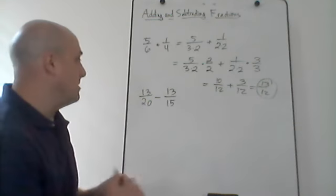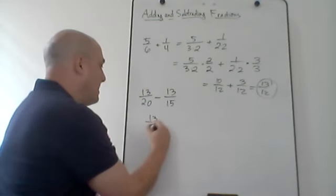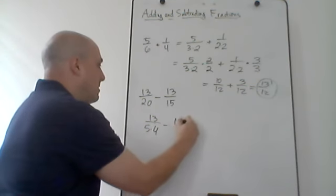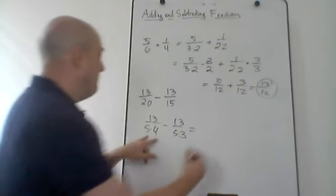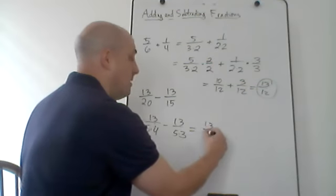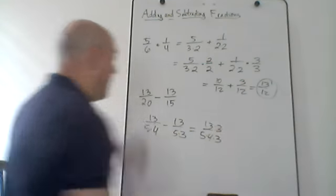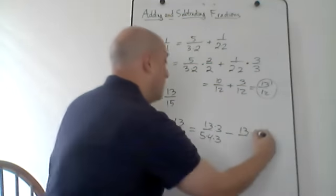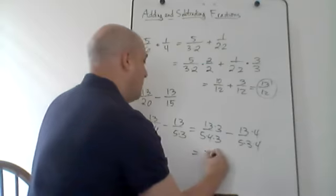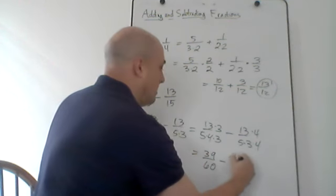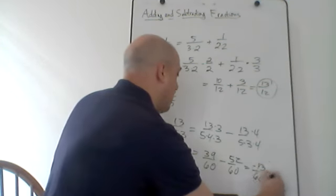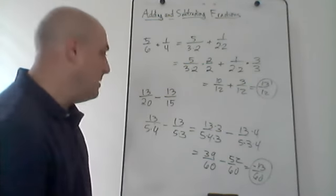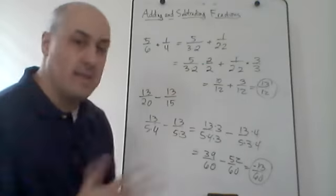For thirteen over twenty minus thirteen over fifteen: twenty factors as five times four, and fifteen factors as five times three. The first fraction has factors five and four but no three, so multiply by three over three. The second has factors five and three but no four, so multiply by four over four. That gives thirty-nine over sixty minus fifty-two over sixty, which equals negative thirteen over sixty. To add or subtract fractions: find the common denominator, unsimplify your fractions to make those denominators match, then add or subtract from there.